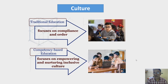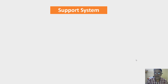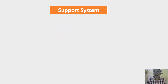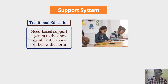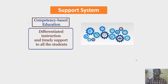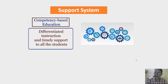The traditional system has a need-based support system. Students are helped only if they are found to be significantly above or below the performance norm or grade-level expectation — for example, special education for intellectually challenged students or gifted and talented students. In contrast, competency-based education is designed to offer differentiated instruction and timely support to all students. It offers flexible time and additional support to students irrespective of whether their performance is below or above the norms.